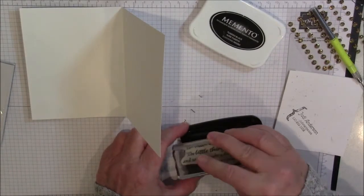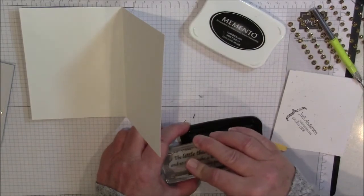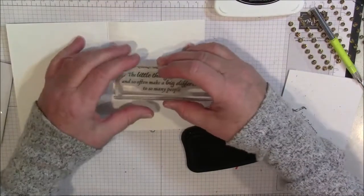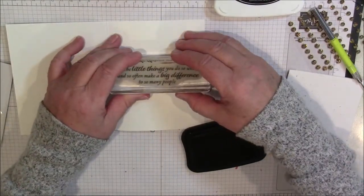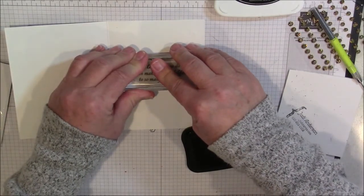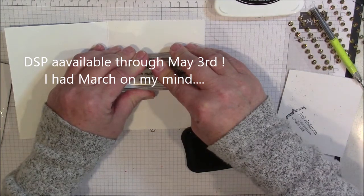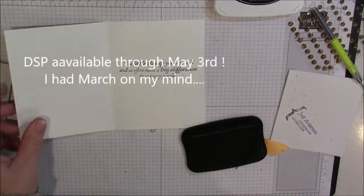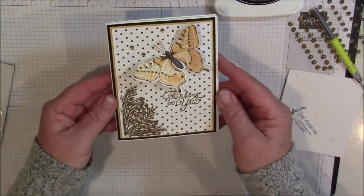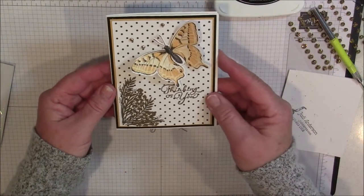So as you can see this designer series paper, the Butterfly Bayou is gorgeous. And it can make your stamping go so quickly. But I do want to warn you, this is a special offer only during the month of March. It will not be in the annual catalog. There we go. So our card is complete. I hope you enjoyed my video today. And until next time everybody, happy stamping.